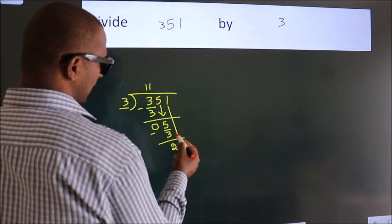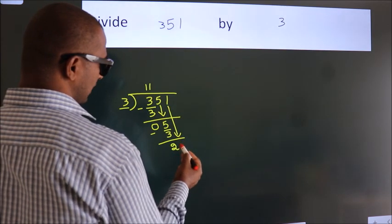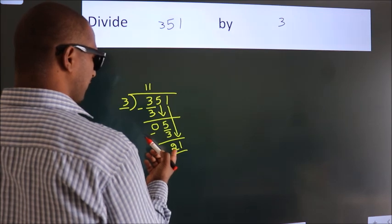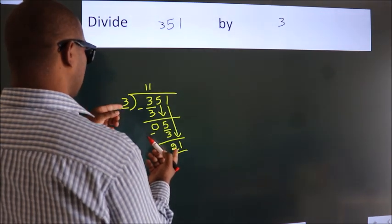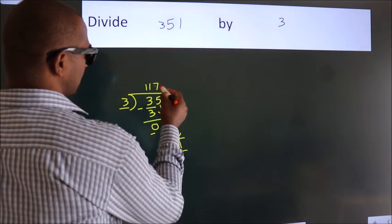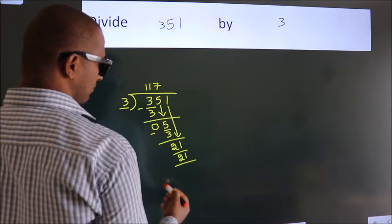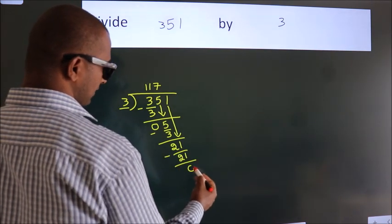After this, bring down the beside number. So 1 down. So 21. When do we get 21? In 3 table, 3 7s, 21. Now, we subtract. We get 0.